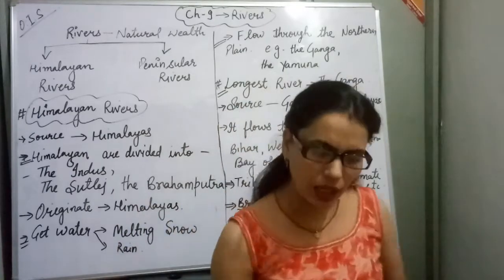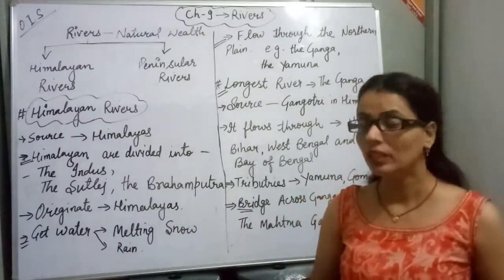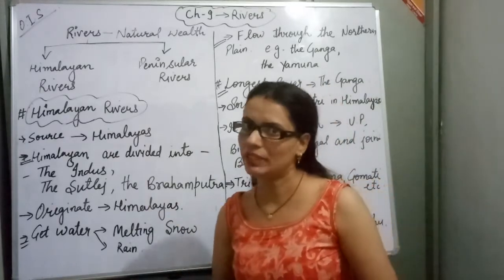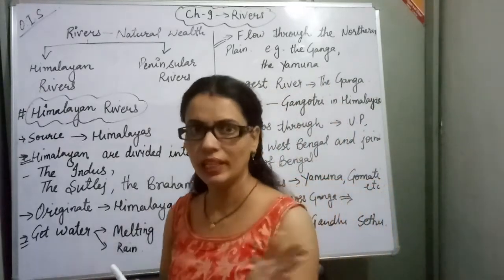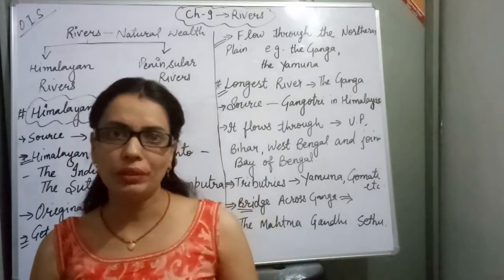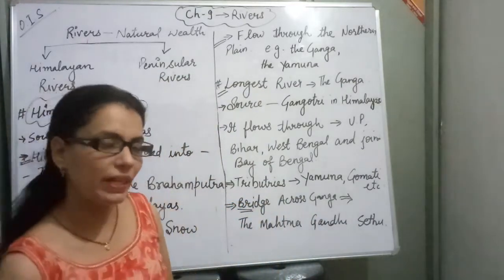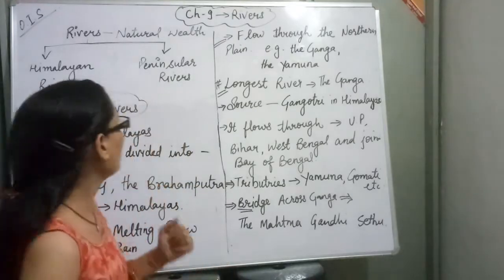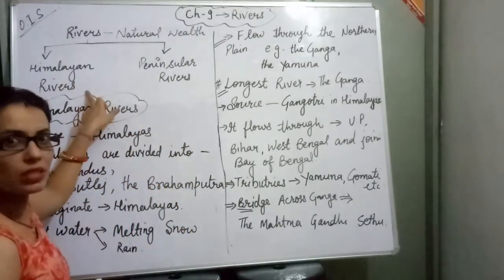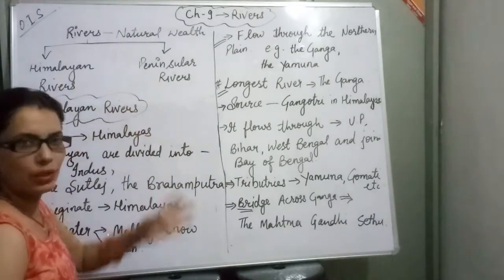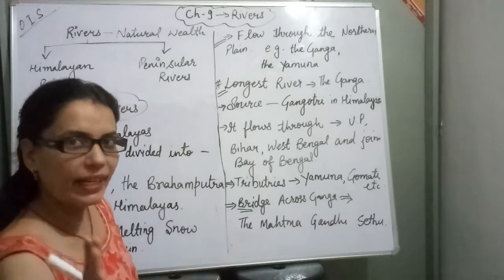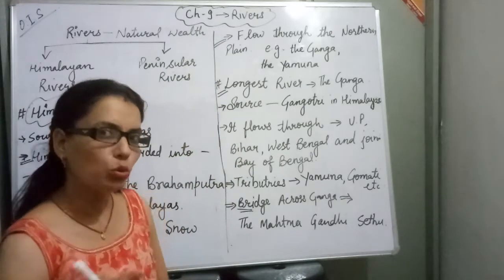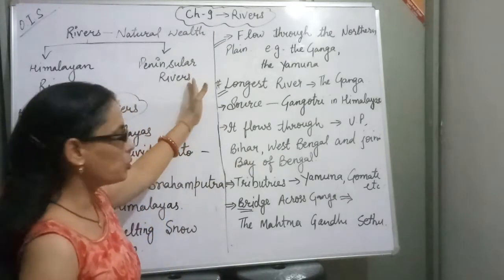We will discuss rivers like Ganga. India has many rivers. These rivers are divided into two categories: number one is Himalayan rivers, and the other one is Peninsular rivers.